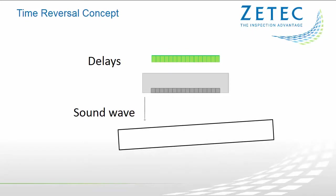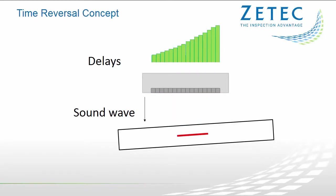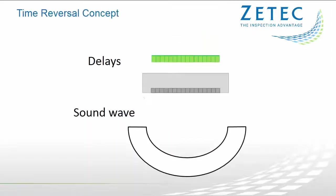Time reversal is a real-time adaptive UT inspection technique meant to eliminate the effects of misalignment between the probe and the specimen. This is achieved by using surface profiling. This process uses the time of flight from individual elements of the probe to characterize the surface of the inspected specimen. Once the surface profiling is complete, a compensation delay is applied to the individual elements of the probe, and essentially normal incidence of the beam on the surface is achieved.